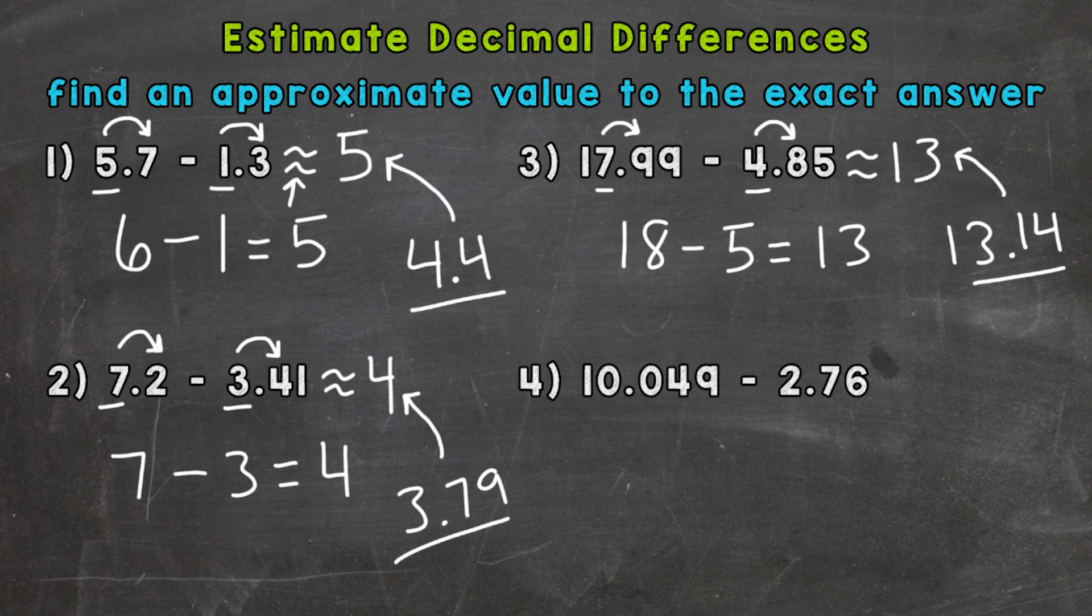Lastly, number four, we have 10.049 minus 2.76. So nearest whole number, 10.049 rounds to 10 minus 2.76 rounds to 3. So 10 minus 3 gives us an estimate of 7.